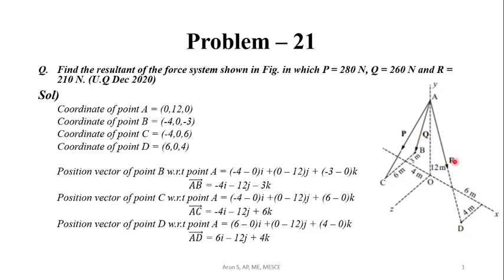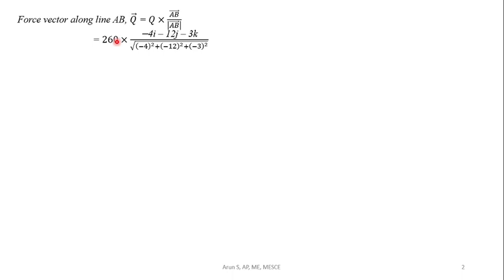Now we will express P, Q and R as force vectors. A force vector is written as the magnitude of the force multiplied by the unit vector along the line on which the force acts. The force vector along line AB is the Q vector, given by Q multiplied by the unit vector along AB. The unit vector along AB is AB vector divided by modulus of AB vector. Q magnitude is 260N and AB vector is -4i - 12j - 3k. The modulus of AB is the root of ((-4)² + (-12)² + (-3)²). Simplifying, we get Q vector as -80i - 240j - 60k.